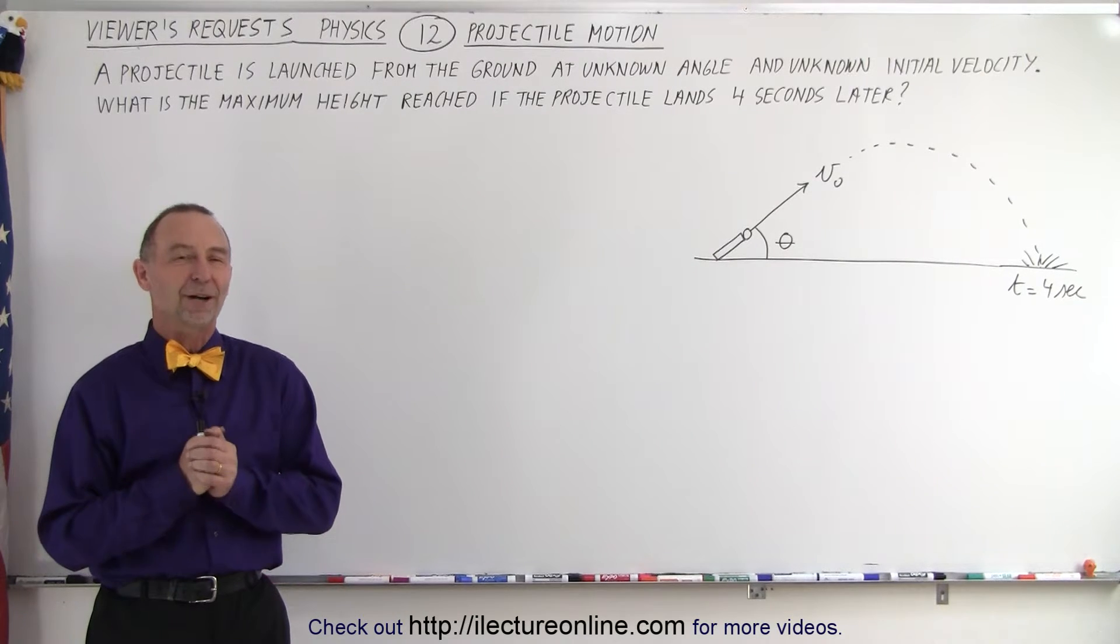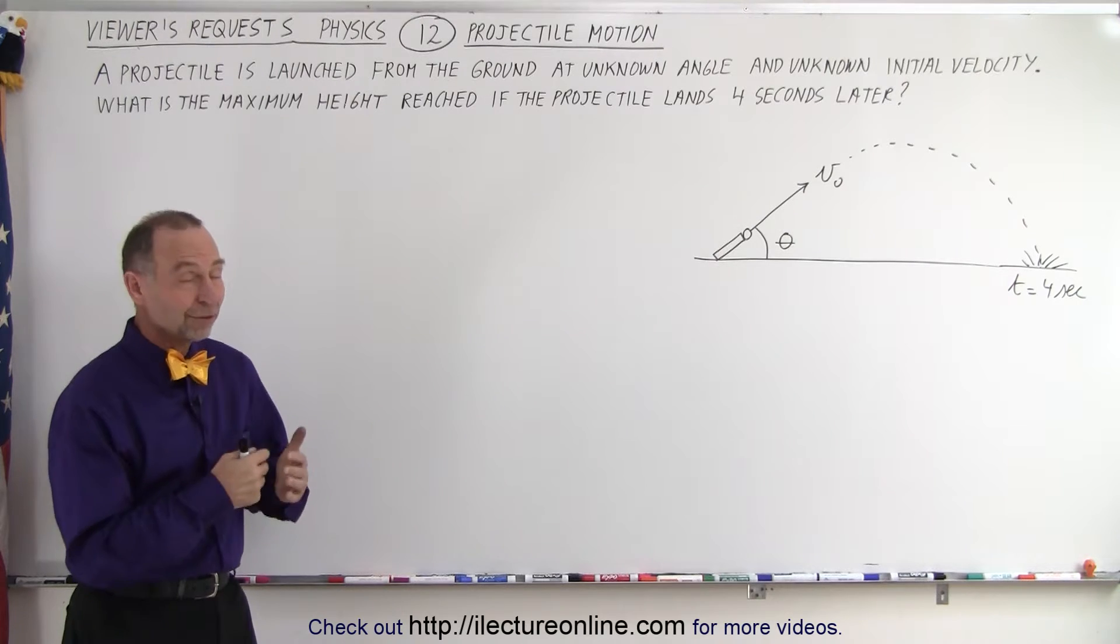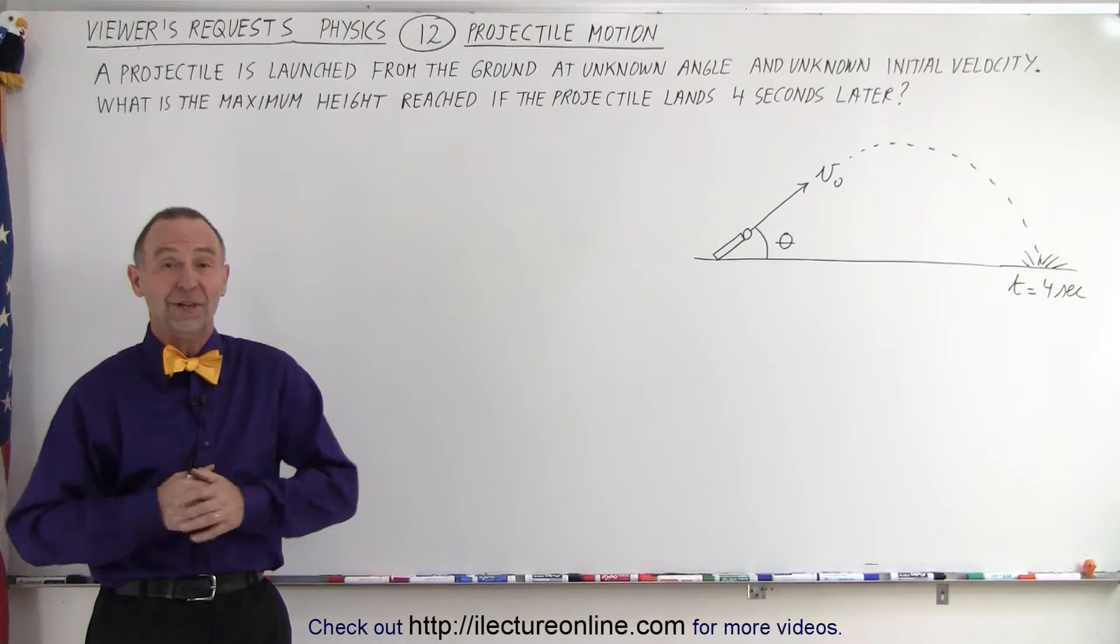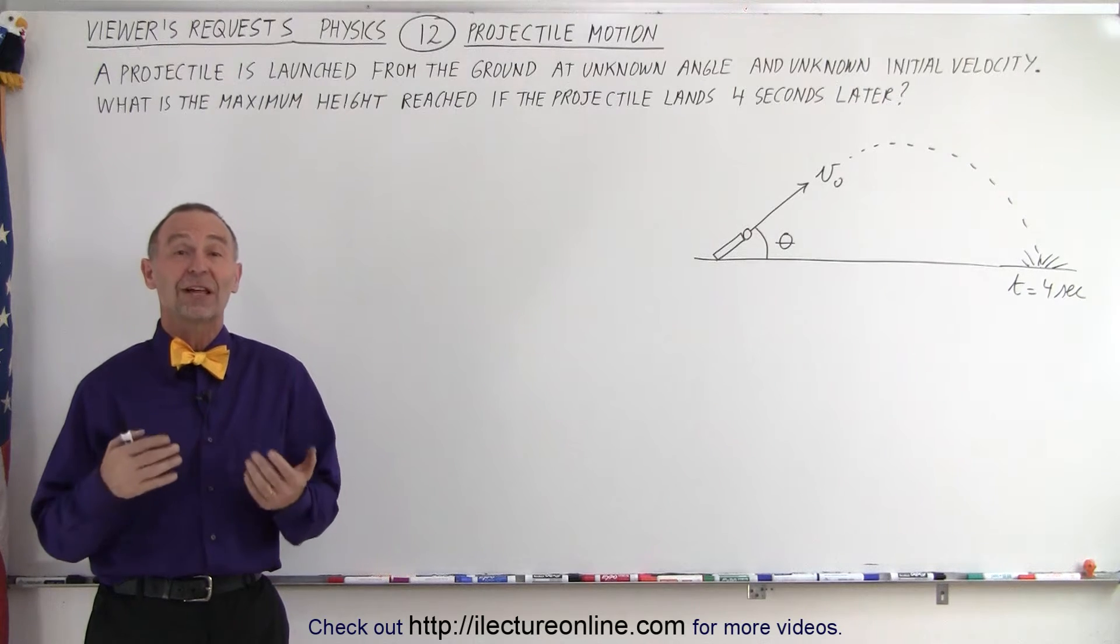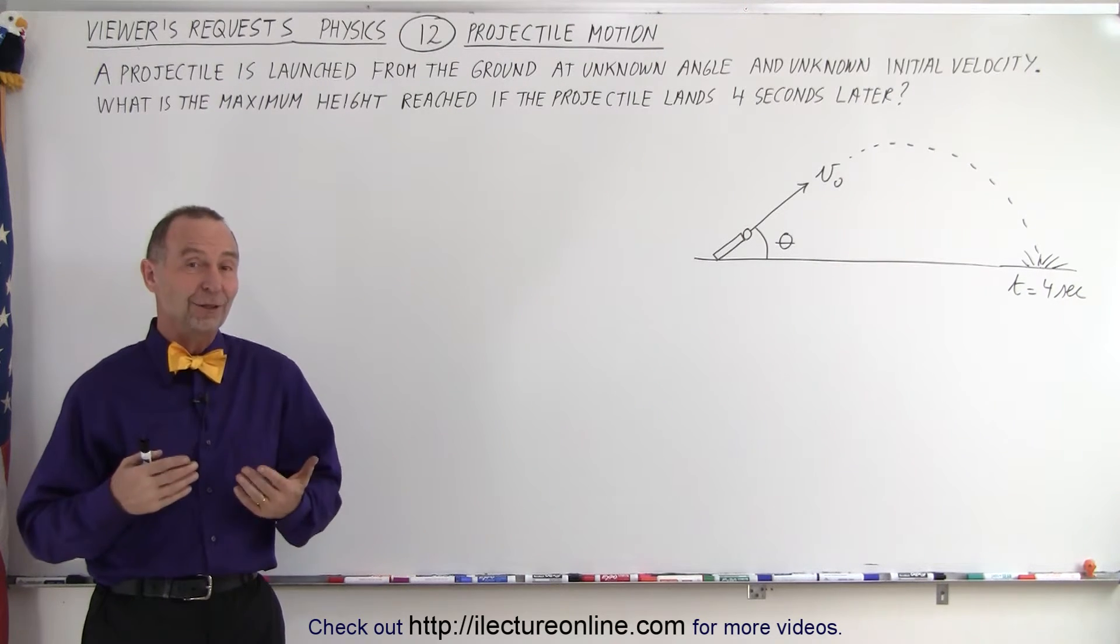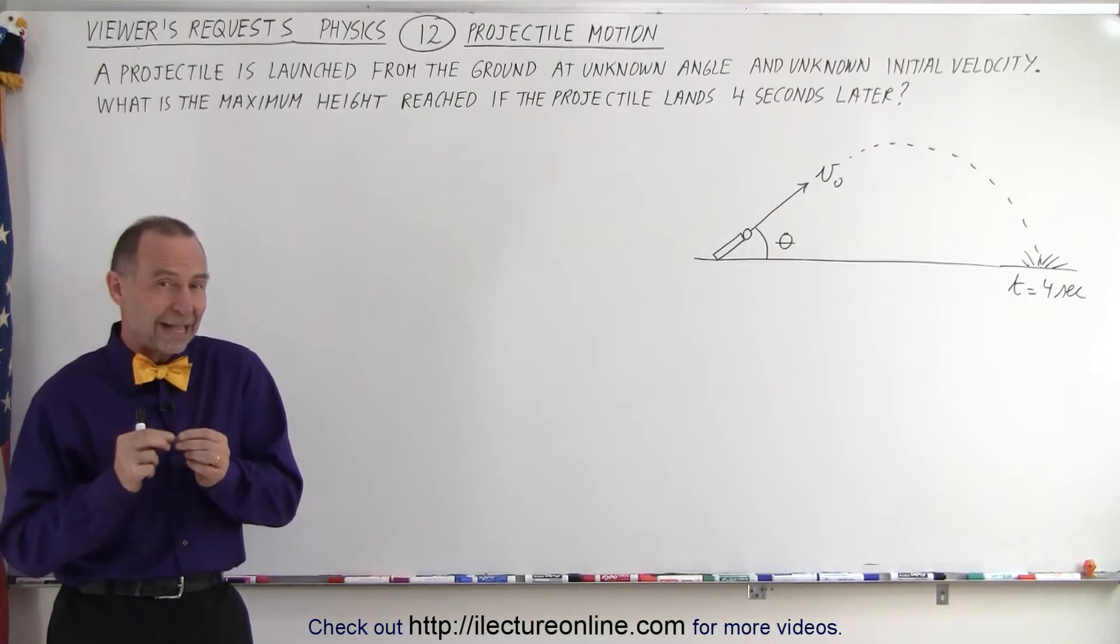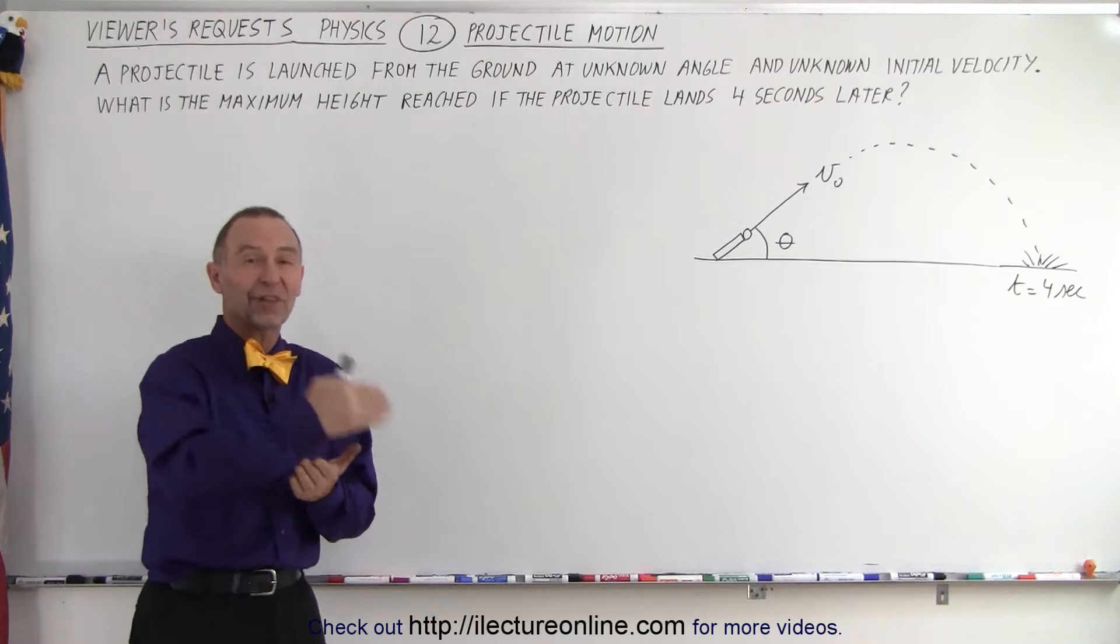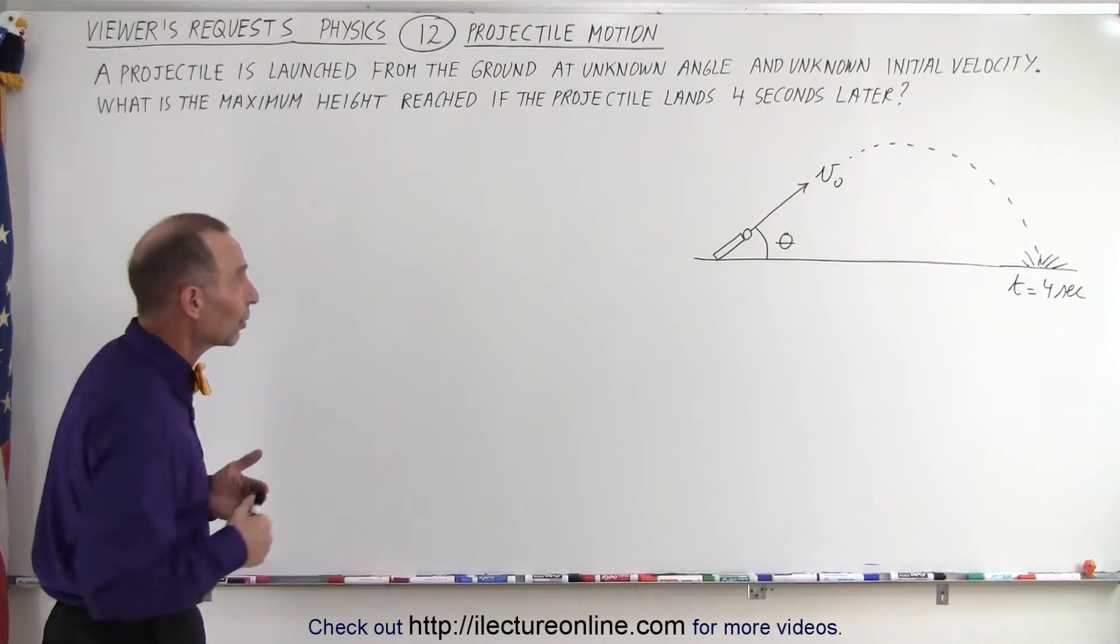Welcome to iLecture Online. Our viewers give us very interesting questions, and here's one I had never seen before. It's a problem where they give you neither the initial velocity nor the initial angle of a projectile being launched from the ground. The only information given is that it lands four seconds later, and they're asking to find the maximum height reached.